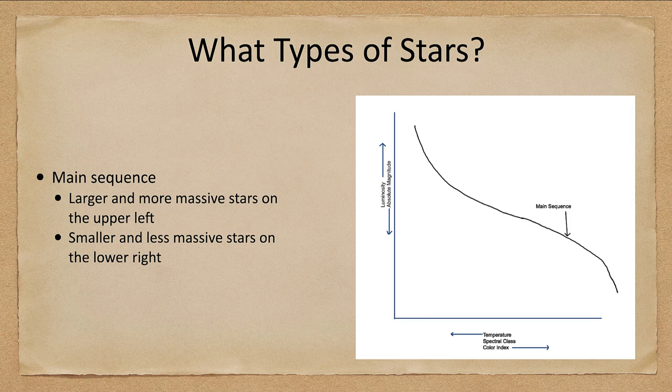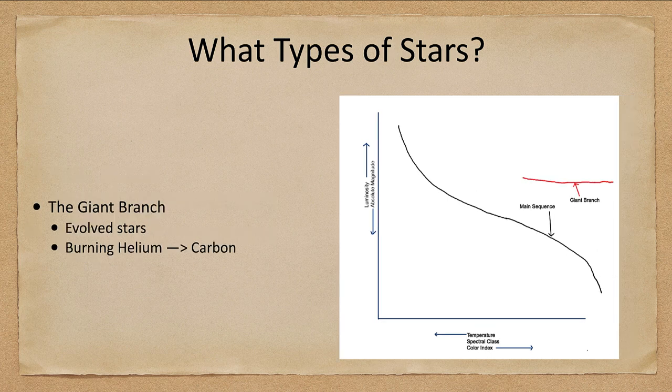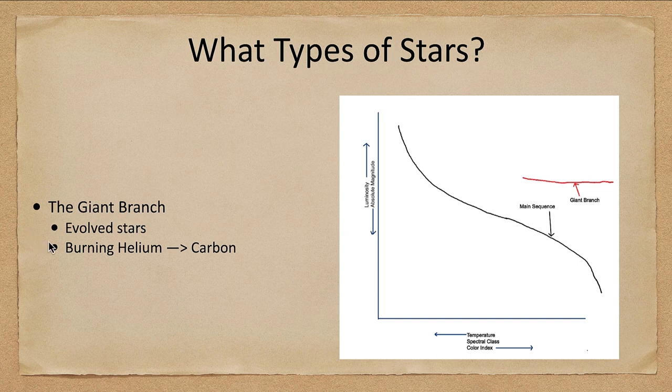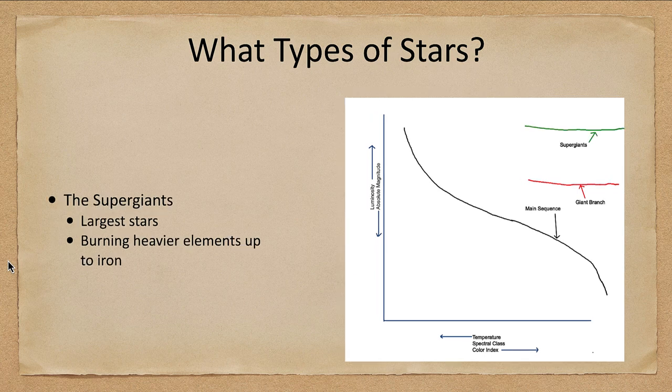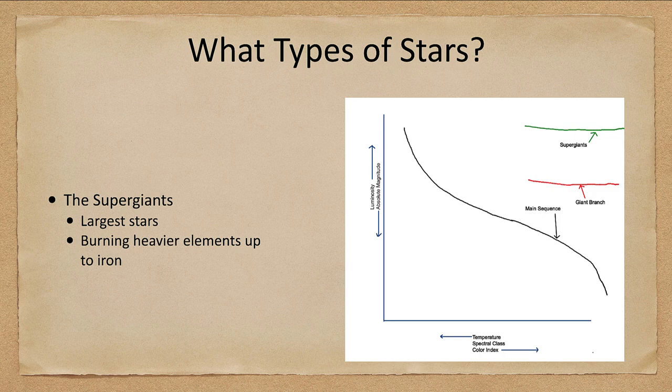Then above that, we will find the giant branch. The giant branch is the evolved stars, which are burning helium into carbon. So they are stars that have already gone through their main sequence lives and evolved off of it. As we continue upward, the supergiant stars shown here. These are the largest stars burning heavier elements up to iron.